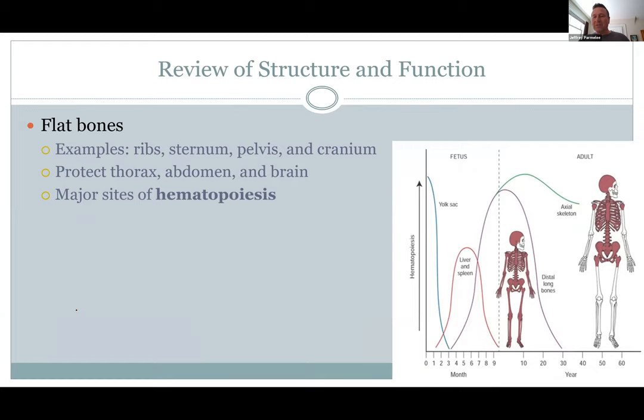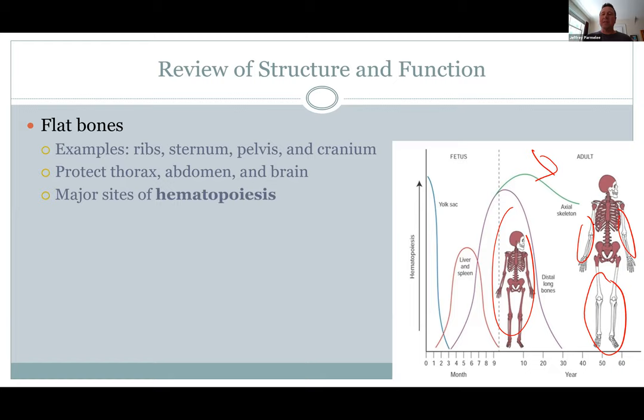Flat bones — talking about the sternum, some skull bones, ribs — are important for hemopoiesis, where you make blood. As a kid, all the bones are chipping in. But as you get older, you don't need your whole skeleton to do it. As you can see, it's really the flat bones — your skull bones, sternum, hip bones, and the proximal parts of your long bones — that are important for making blood. The rest of the marrow is just filled with fat.